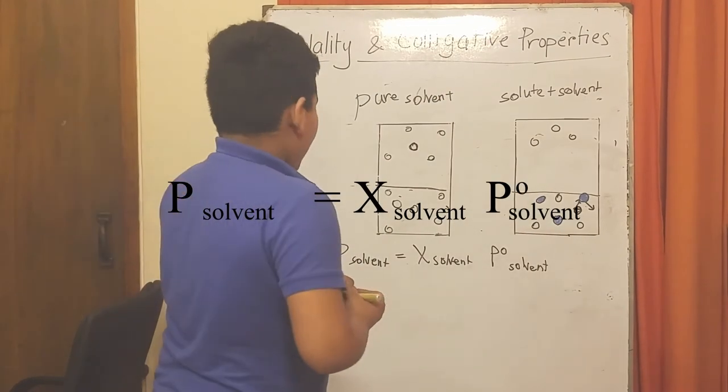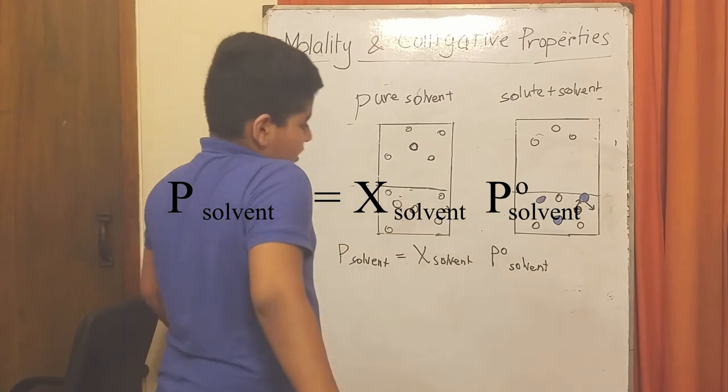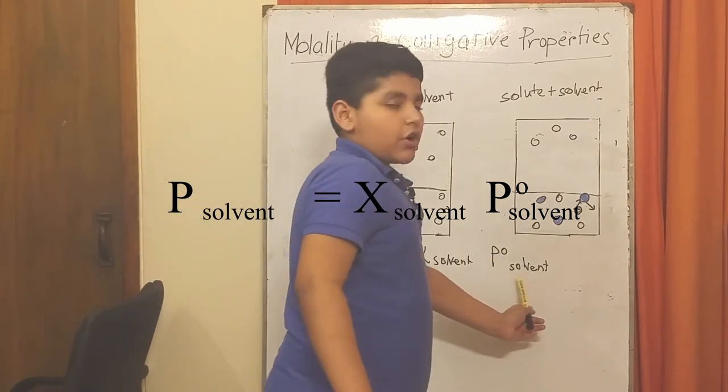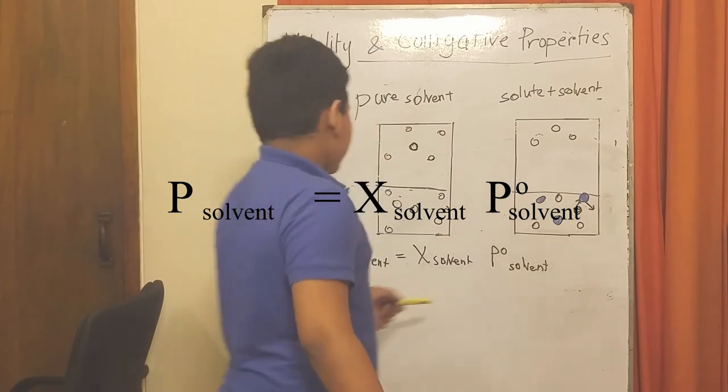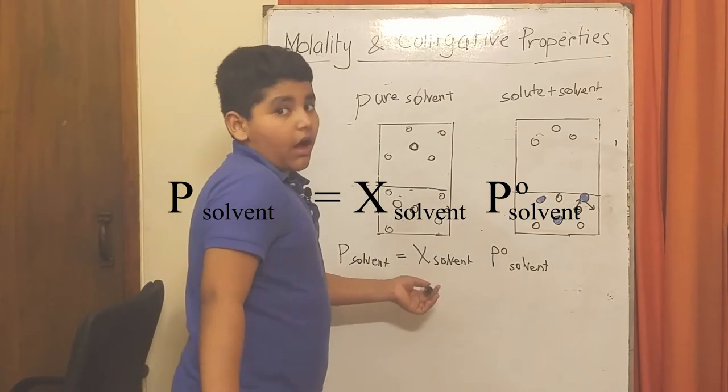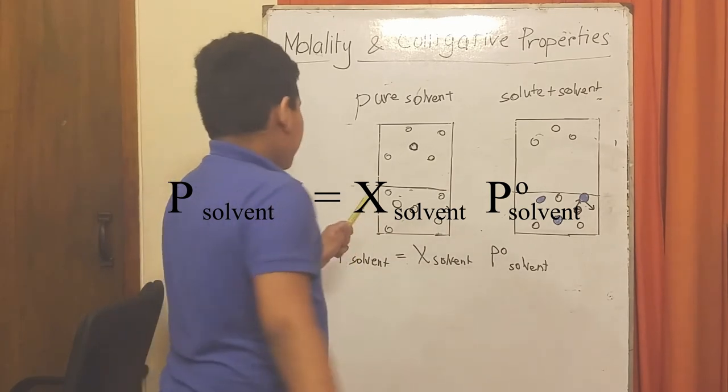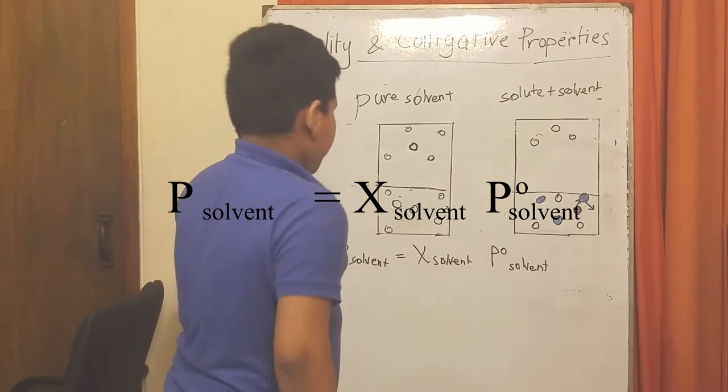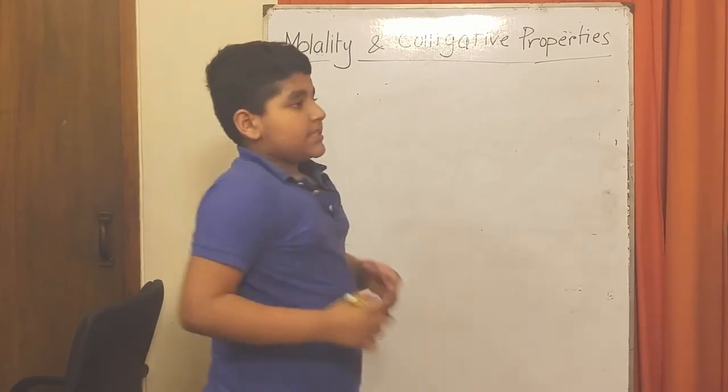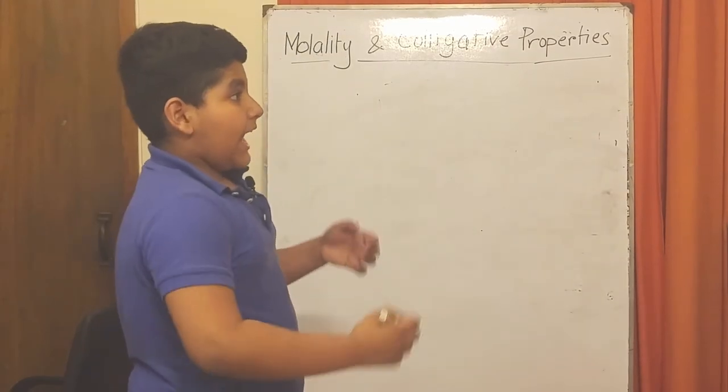To know the vapor pressure, we use the pressure of the pure solvent times the mole fraction of the solvent to get the new vapor pressure of the solvent.